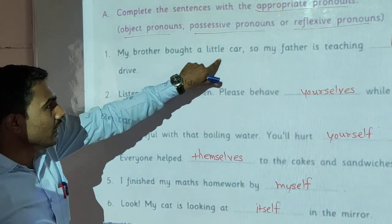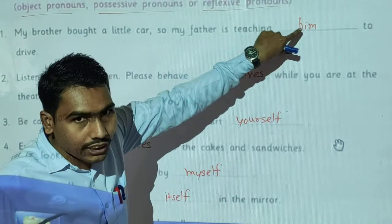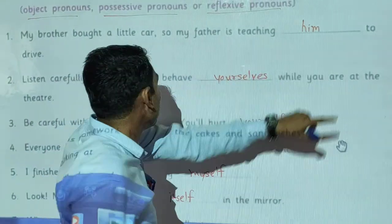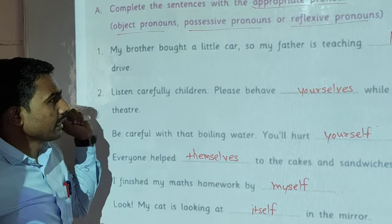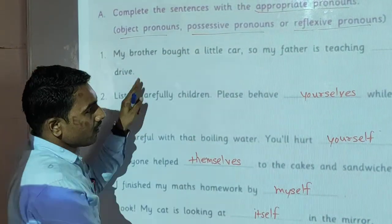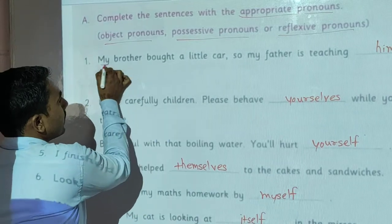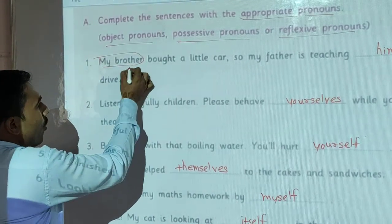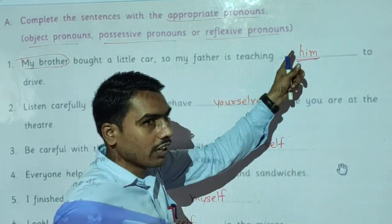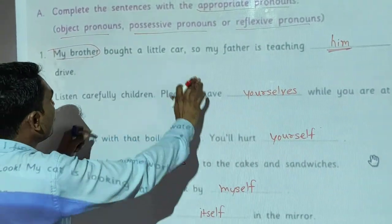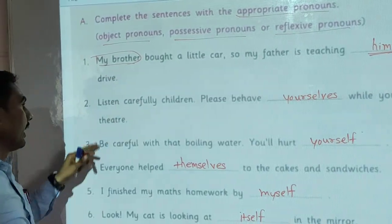My brother bought a little car, so my father is teaching him to drive. In this example, the father is teaching the brother — my brother. For my brother, we use here 'him'. According to sentence meaning, we use here the object pronoun 'him'. I hope you understood.